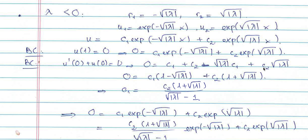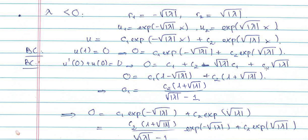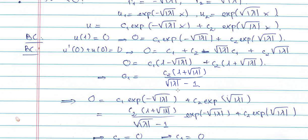I solve for c1 in terms of c2. I group c1 and minus square root of |lambda| times c1, getting c1*(1 - sqrt(|lambda|)). I group c2 and c2*sqrt(|lambda|), getting c2*(1 + sqrt(|lambda|)). Solving this equation gives c1 = c2*(1 + sqrt(|lambda|)) divided by (1 - sqrt(|lambda|)).